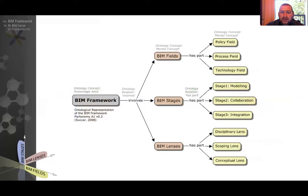The last slide shows another look at the tri-axial model using a concept map. Here you can see BIM fields, BIM stages, and BIM lenses as concepts related to other concepts. This is just a different way of understanding the tri-axial model. One is a visual representation using three axes, and one is a concept map using concepts and relations, which are part of the BIM ontology.